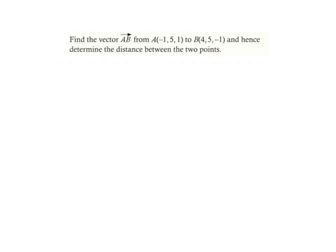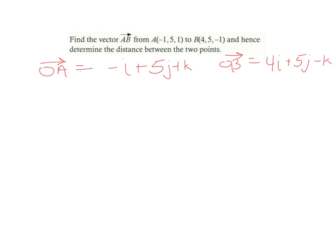Let's do an example. Find vector AB from point A at negative 1, 5, 1 and B at 4, 5, negative 1, then determine the distance between the two points. First, let's find OA: that's negative I plus 5J plus K. And vector OB is 4I plus 5J minus K. Vector AB is found from OB subtract OA.